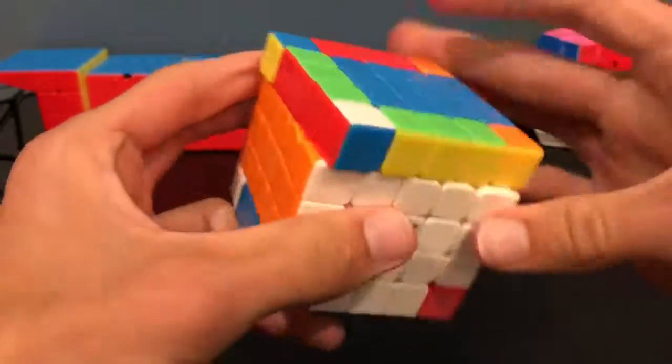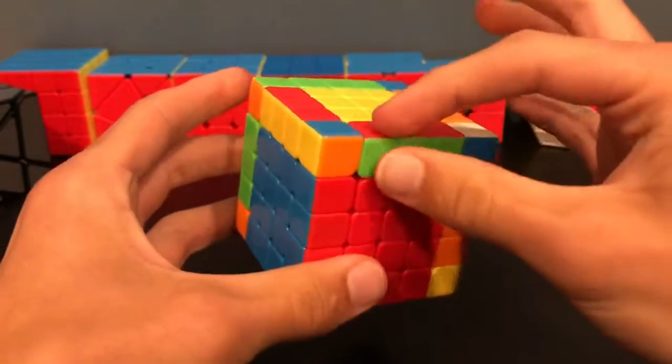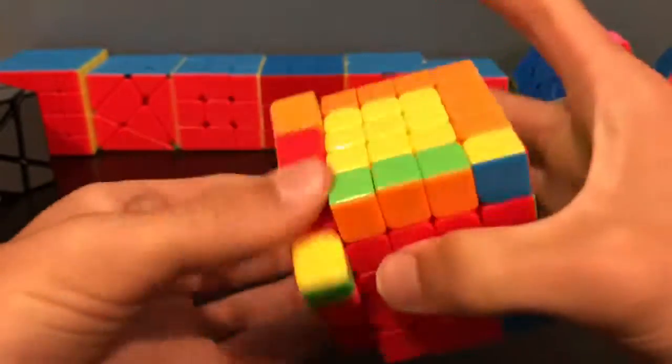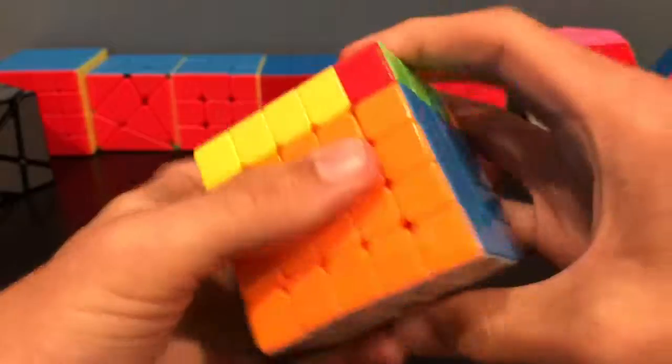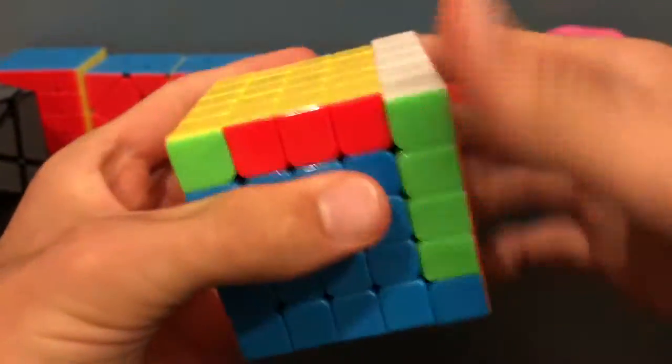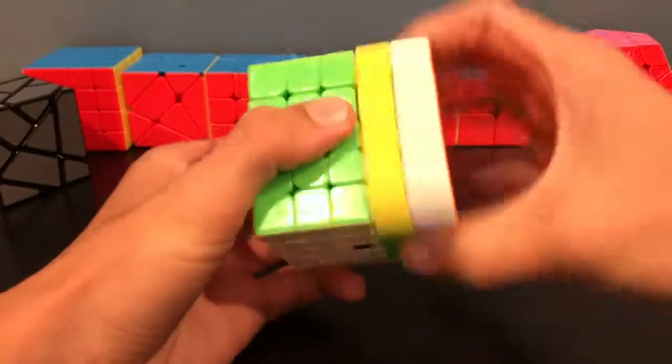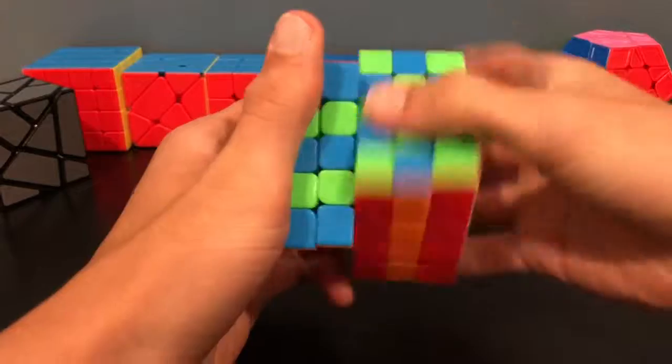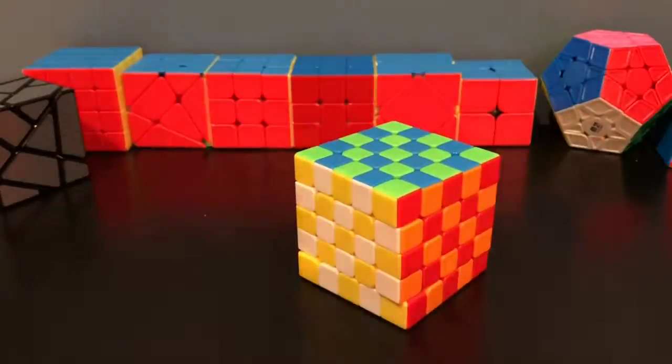Now that we have all the edges paired up, we can move on to the 3x3 stage. So all this means is act like this is one edge piece and that this is one center piece. It doesn't matter what method you use, as long as you know how to solve a 3x3, you should be able to do this stage pretty easily. Then you're done. If you want to see more tutorials or even faster ways to solve the 5x5, check out my channel. I have tons of videos. I hope this video is helpful to you, and for the future, good luck!